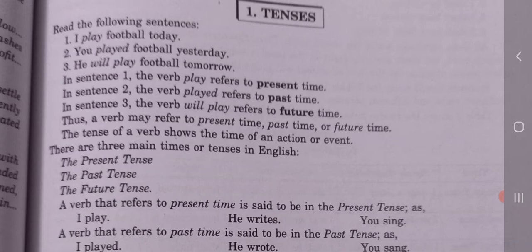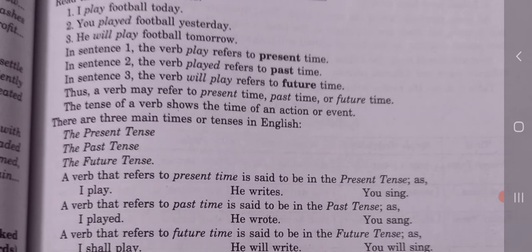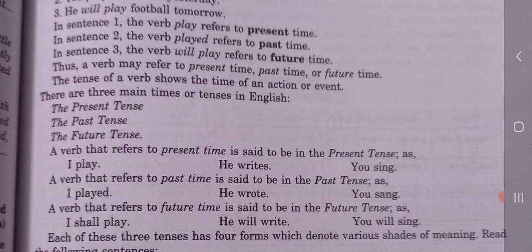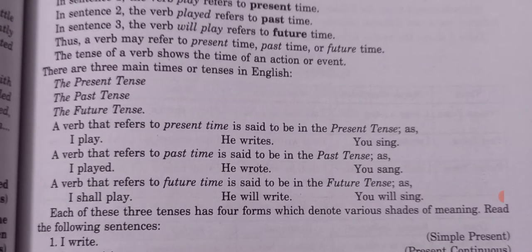There are three main types of tenses in English: number one, present tense; number two, past tense; number three, future tense. A verb that refers to present time is said to be in the present tense. It is actually depending on the verb — by the verb only we can know whether the tense is present, past, or future.